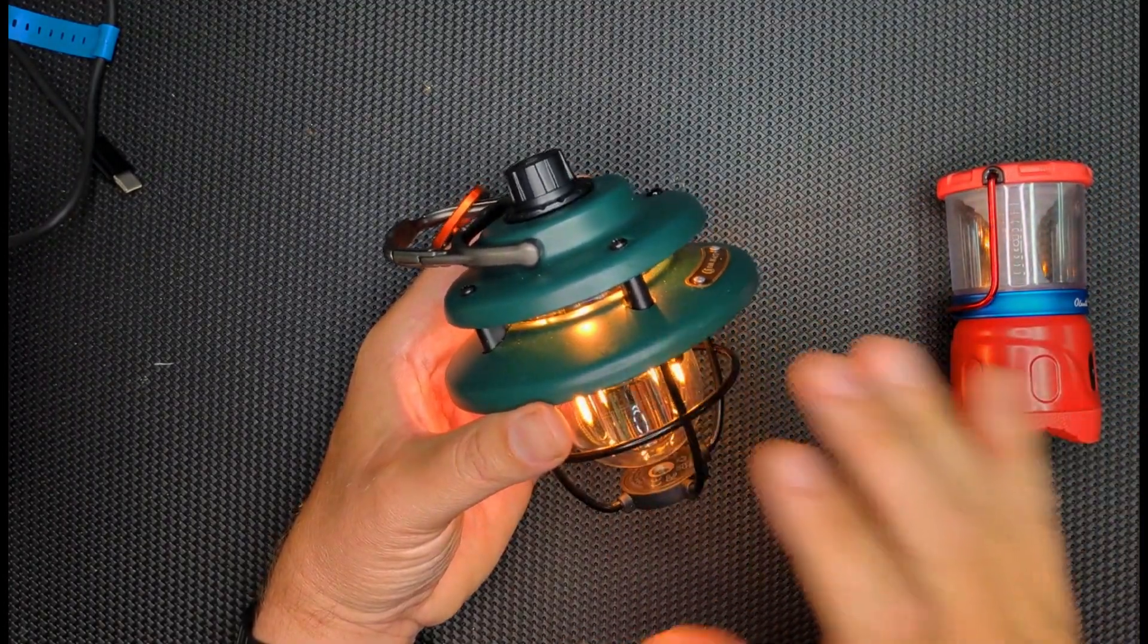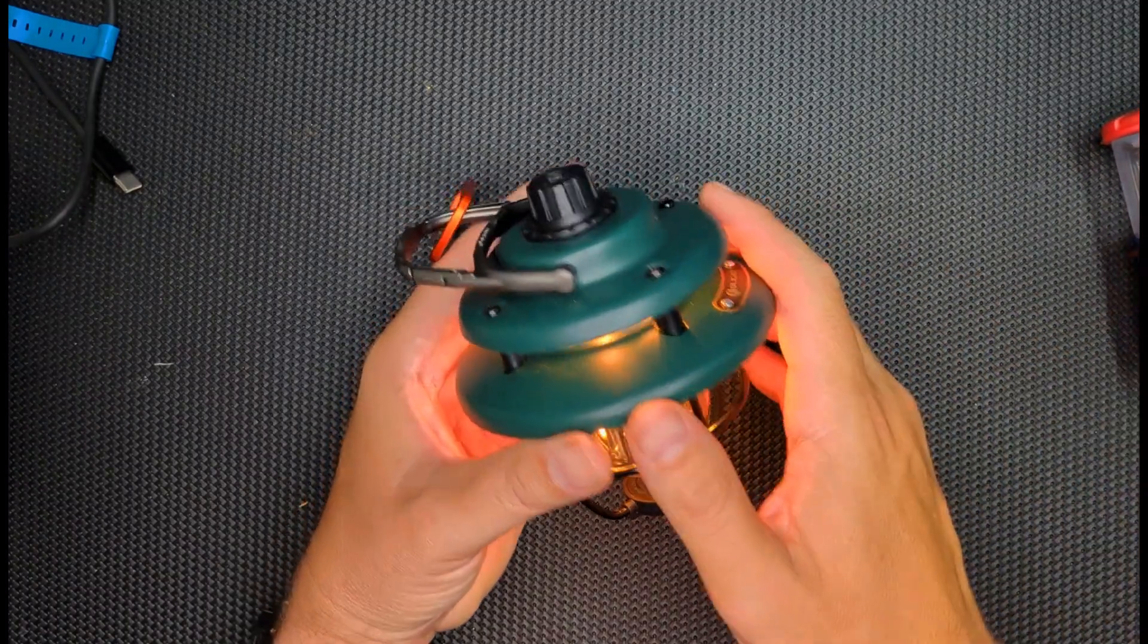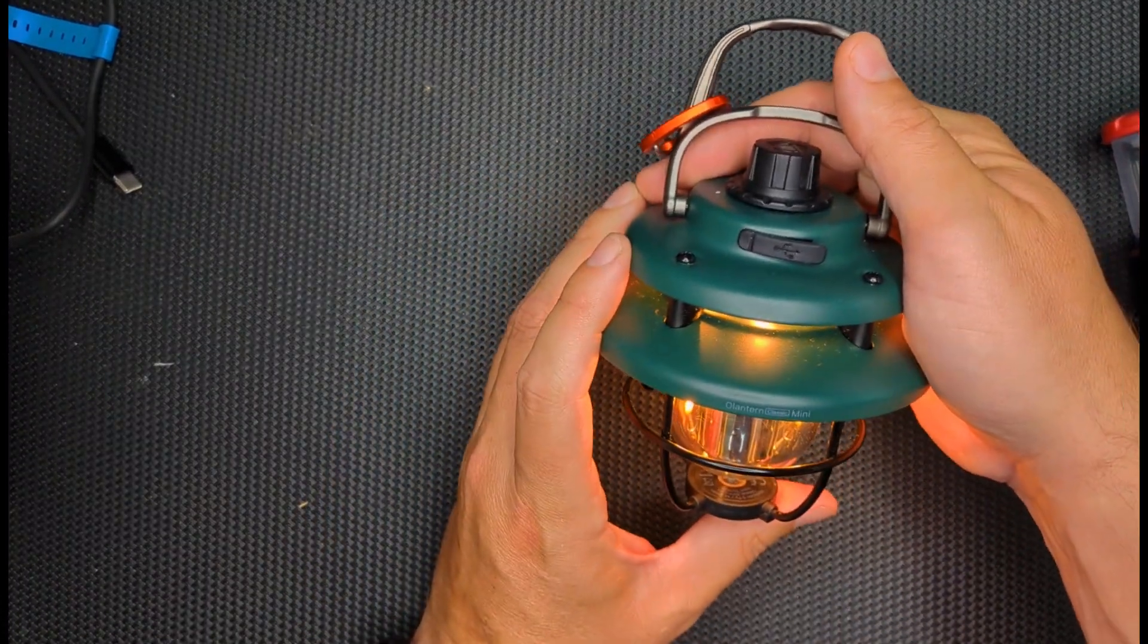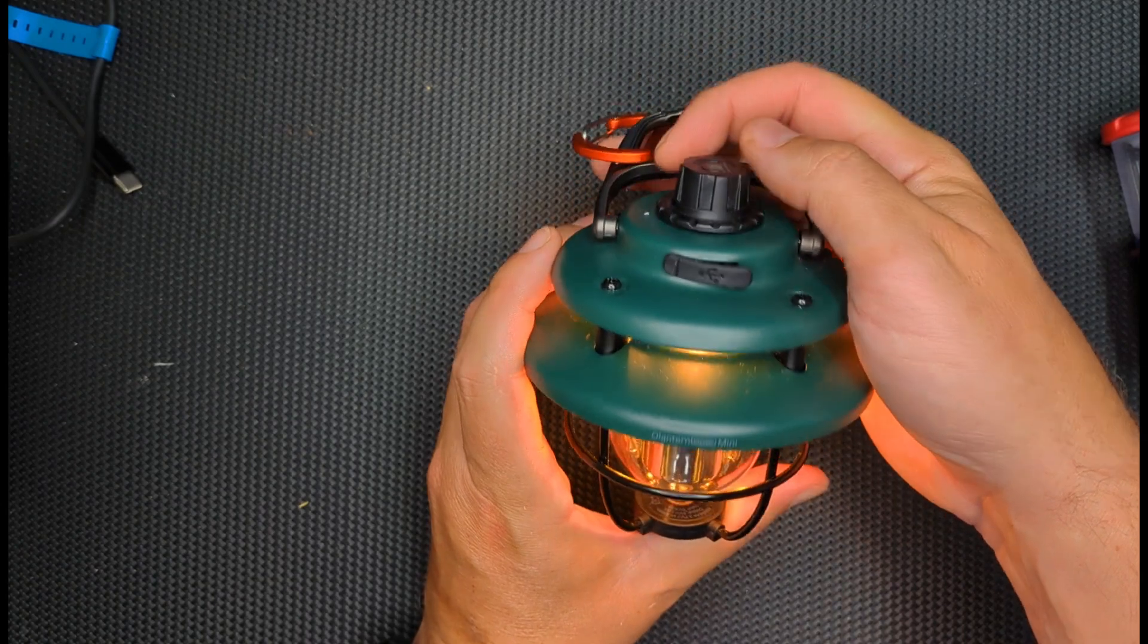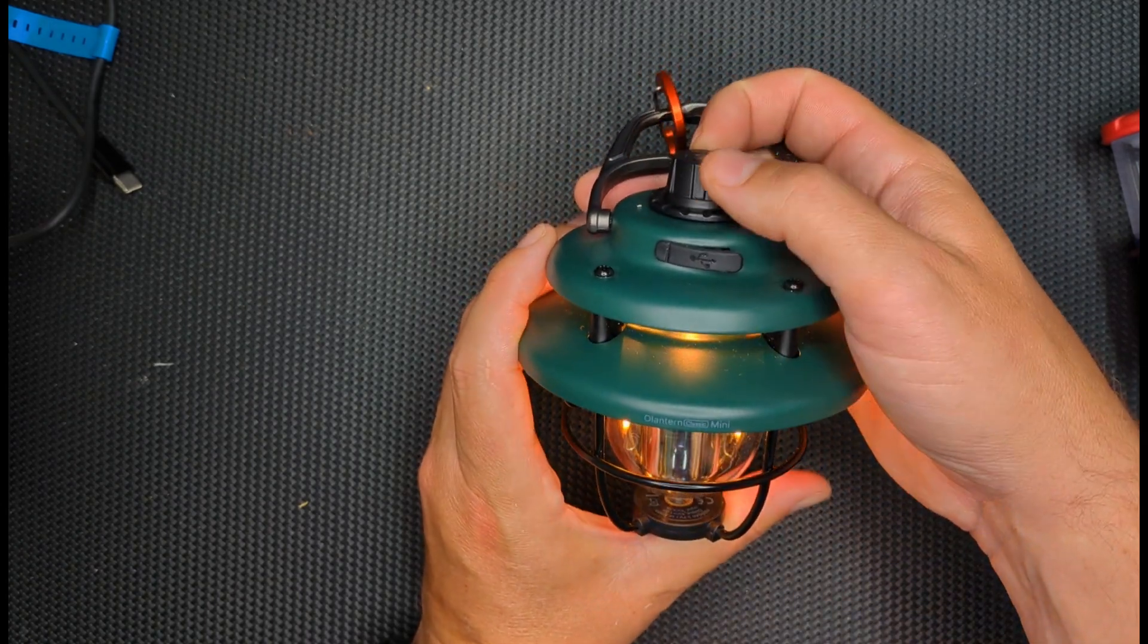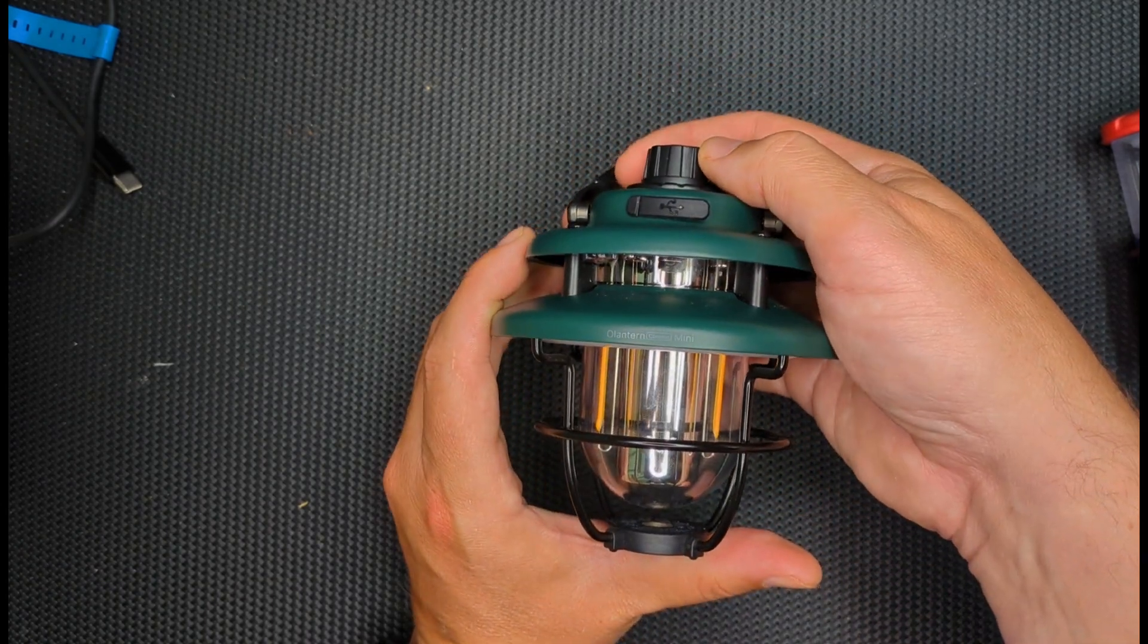So first off, let's just take a tour of this one light. Olight came out with this, I believe this is new this year. What I find really intriguing by this light, and the first thing that caught my eye, is that it has a rheostat dimmer on the top of it.